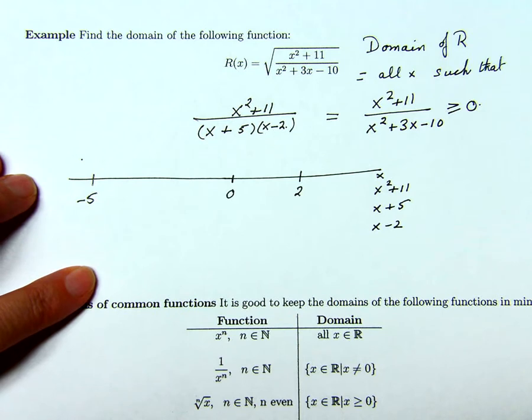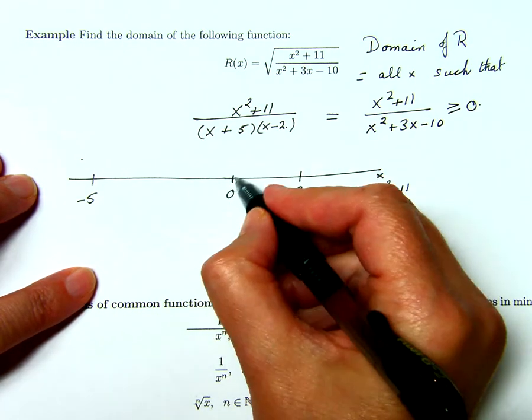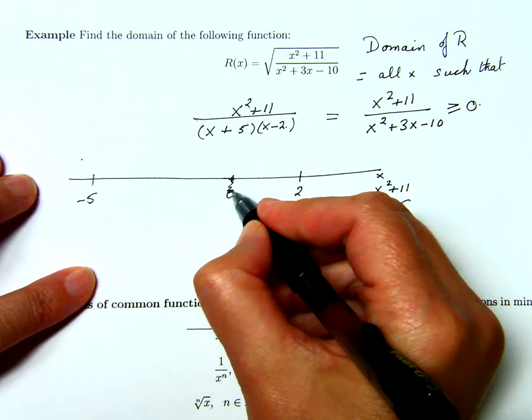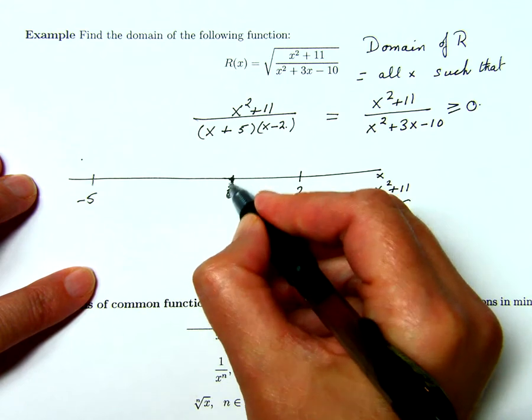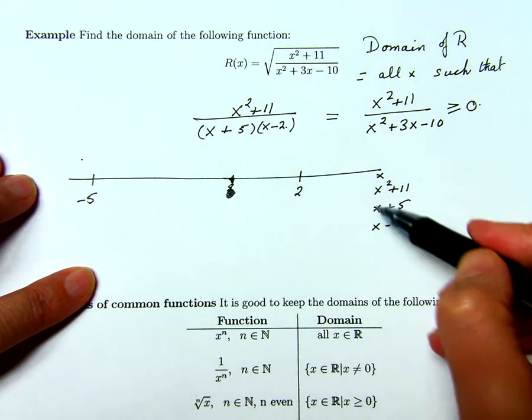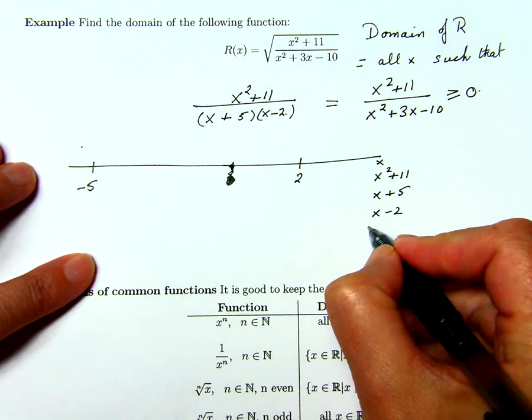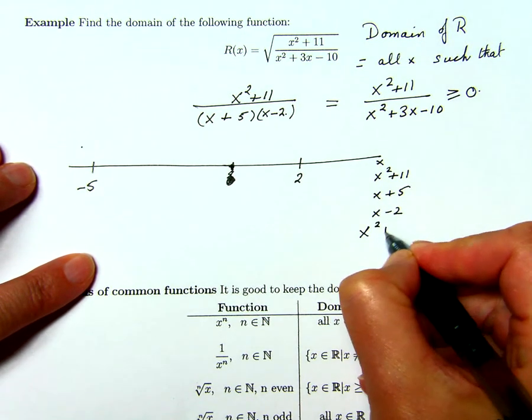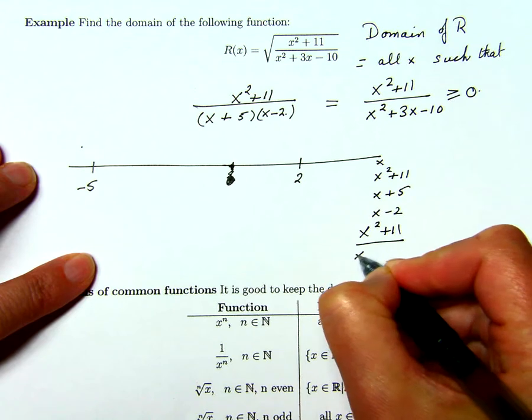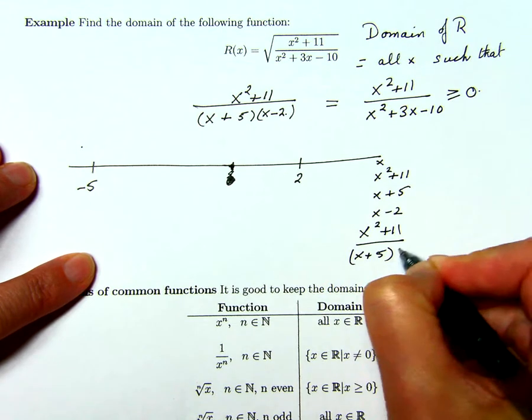And I'm just throwing 0 in there, actually maybe I shouldn't have done that just as a reference point, but the function, the quotient does not change sign there. So we want to figure out what happens, the quotient x squared plus 11 over x plus 5 times x minus 2.